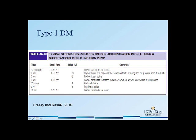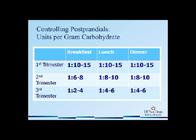We have insulin boluses that are given with pre-breakfast, pre-lunch, and pre-dinner. Generally speaking, I have my patients calculate units of insulin to be given per carbohydrate. In the first trimester, I instruct them to start one unit of insulin every 10 to 15 carbs for breakfast, lunch, and dinner, and then adjust as we go forward.